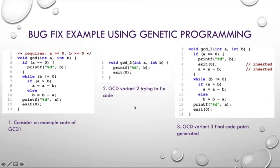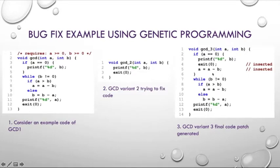The GCD2 variant is a patch produced by Genprog that passes for the test case (0, 55) but fails for other important functionalities. Genprog then modifies the lines again since the previous test case failed. It modifies lines 4 to 5 and inserts code like 'exit(0)' and 'A = A minus B'. This GCD2 variant 3 is the final repair patch — this is the genetic programming that repairs programs by selectively searching nearby program variants until it discovers one that avoids defects and retains key functionality.